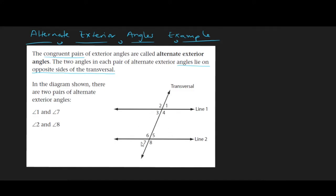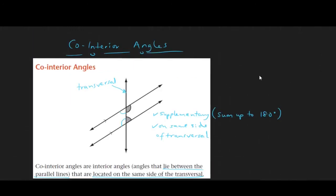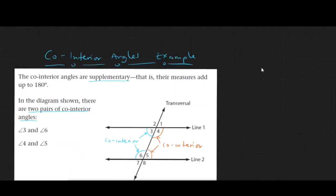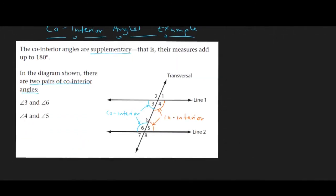What about co-interior angles? These lie on the same side of the transversal and are supplementary, adding up to 180 degrees. In this diagram, angles 4 and 5 are co-interior, and angles 3 and 6 are also co-interior.